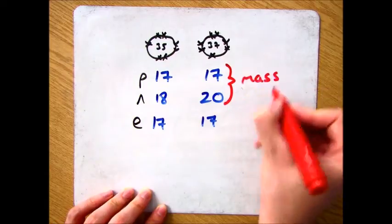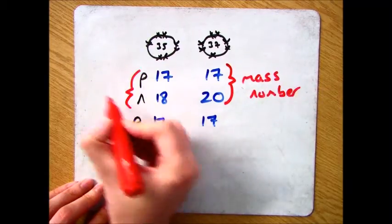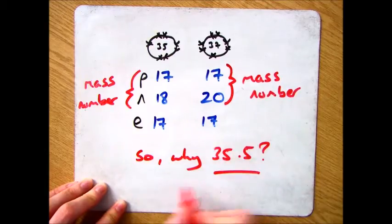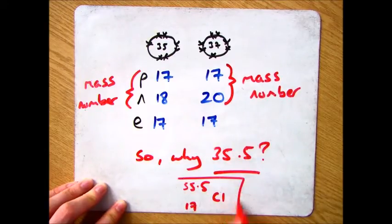Now you'll recall that the mass number is made up of the protons and neutrons, so we've got 37 and 35 for our two different isotopes. So the question is, where do we get our 35.5 from?